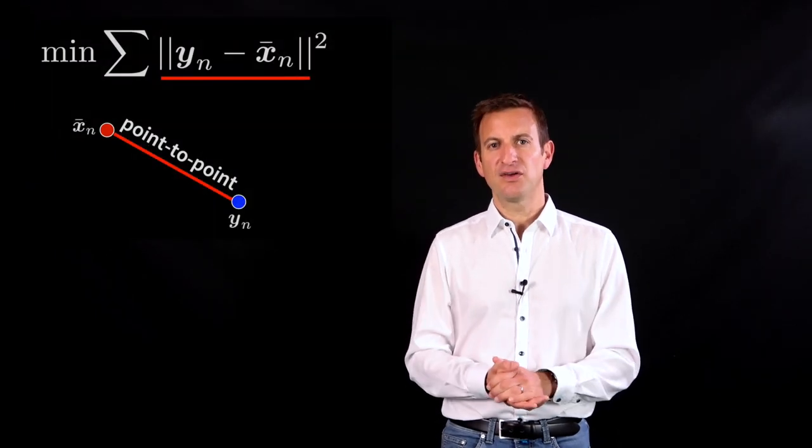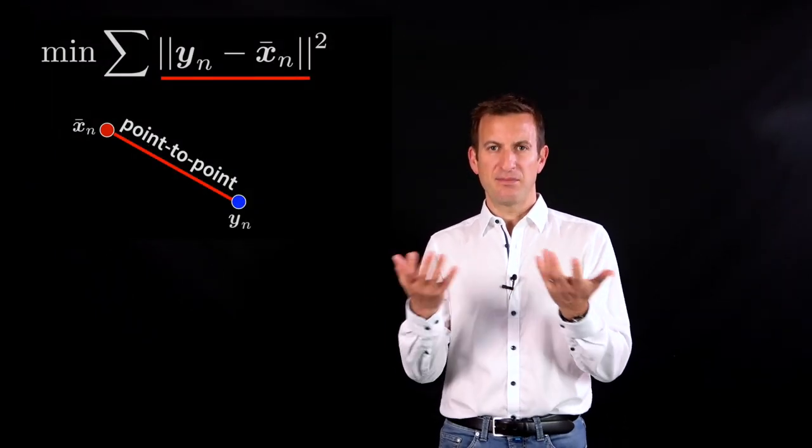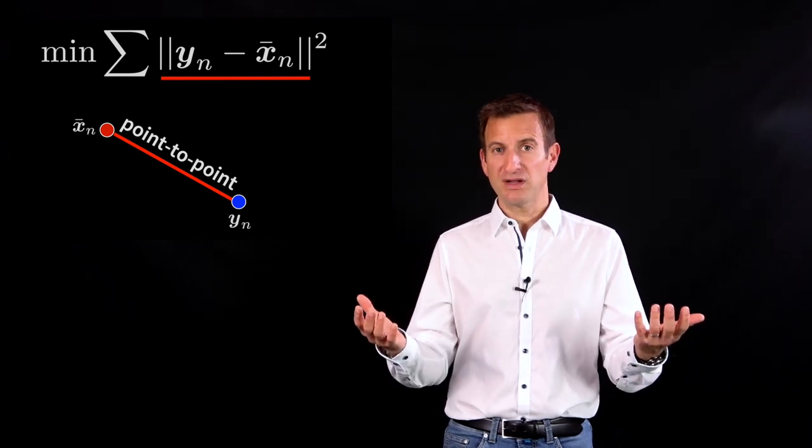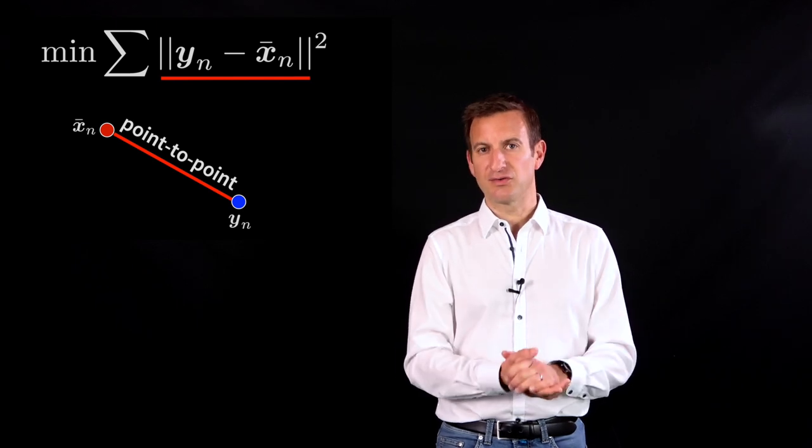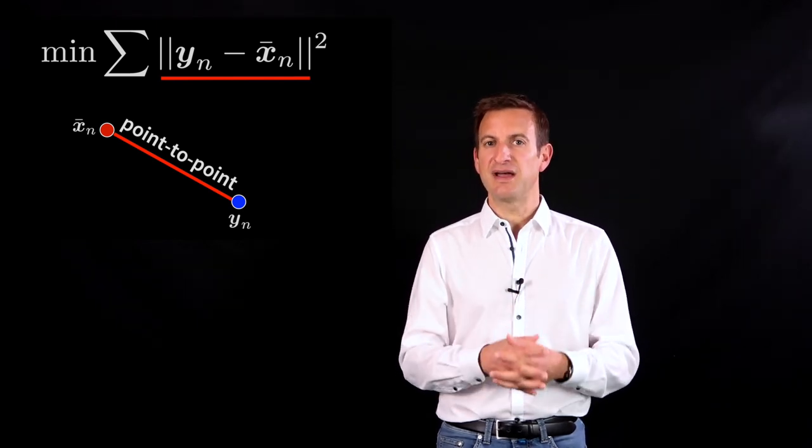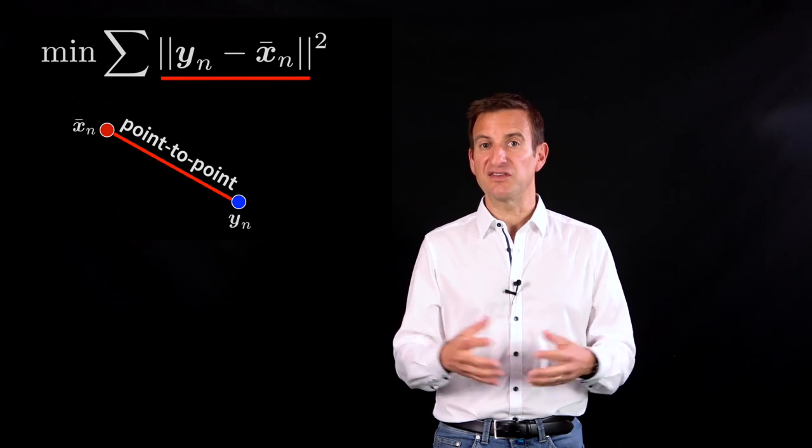In point-to-point ICP, we are taking the points of one point cloud and looking for the closest point in the other point cloud for all those points. Then we are trying to minimize the square distances between them.